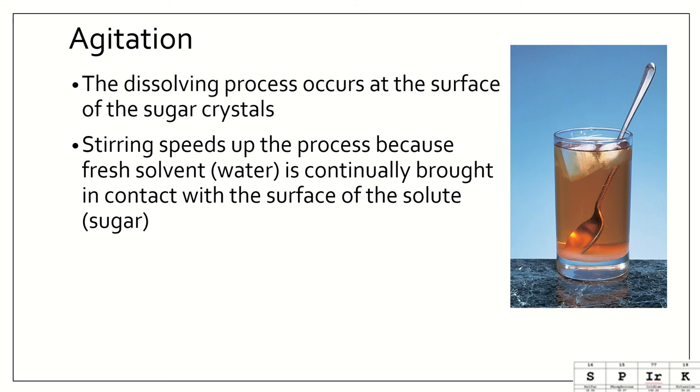So we can stir it and stirring speeds up the process because fresh solvent, which would be the iced tea or the water, is continually brought in contact with the surface of the solute, which is the sugar. So as you're stirring it, you're bringing fresh water in the glass that doesn't have sugar dissolved in it yet to the sugar. So that fresh water is now going to try to dissolve those new sugar molecules.